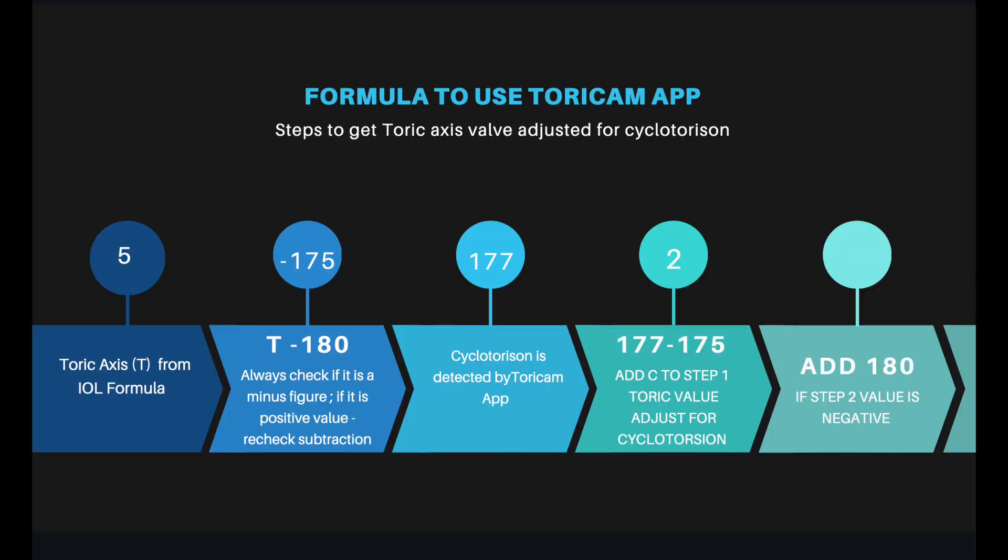Going by the formula: Step 1 is T minus 180. Then check the cyclotorsion from the TORIC M app, which was 177. Adding 177 to −175 gives a positive value of 2, which we can use on the TORIC M app.